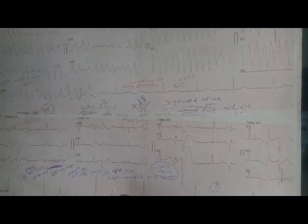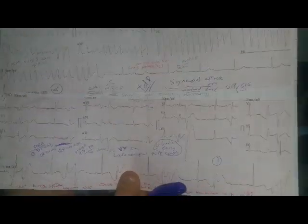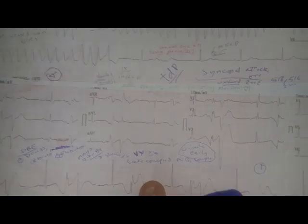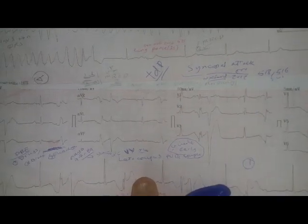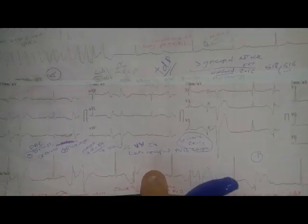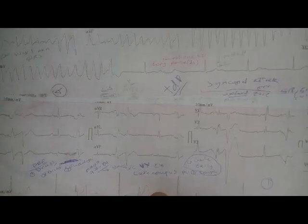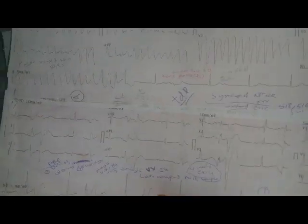They treated by DC shock and by amiodarone, but recurrence occurred. During investigation of electrolytes, she was found to have severe hypokalemia and hypomagnesemia. She received a complete dose of potassium and magnesium, and after that she recovered without recurrence.